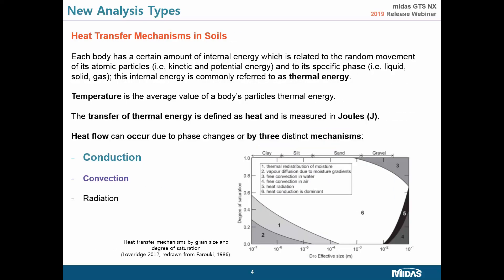Every body has some kind of internal energy called thermal energy, and this amount of energy is related to random movement of atomic particles. Temperature is the average value of a body's particles' thermal energy. Since we have temperature, we can talk about transfer of thermal energy. This movement of thermal energy is defined as heat and is usually measured in joules. In the latest user interface, a new energy unit has been added, so we can switch between calories, joules, and other units to measure thermal energy.